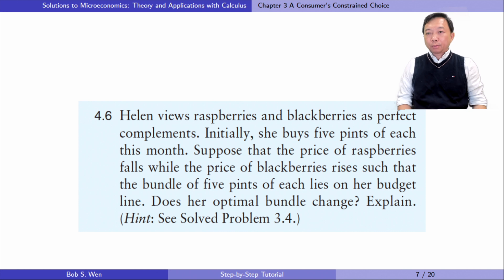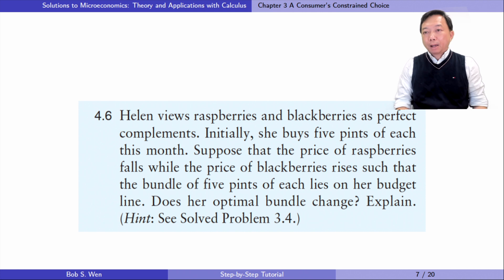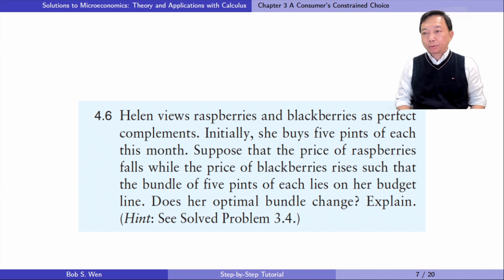Let's do exercise 4.6. Helen views raspberries and blackberries as perfect complements. Initially, she buys five pints of each this month. Suppose that the price of raspberries falls while the price of blackberries rises, such that the bundle of five pints of each lies on her budget line. Does her optimal bundle change? Explain.